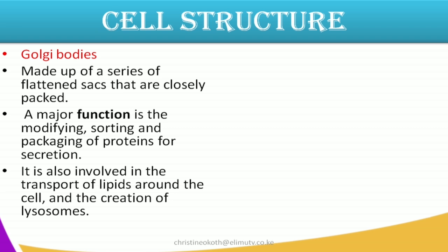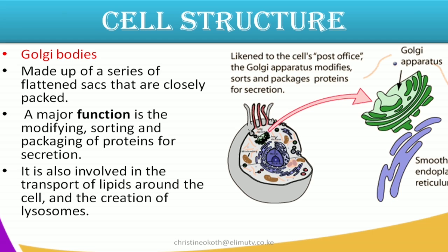Another structure found in the cell is what we call Golgi bodies or the Golgi apparatus. These are made of a series of flattened sacs that are closely packed. The major function is modifying, sorting, and packaging of proteins for secretion. The ribosomes synthesize the protein, and when these proteins are synthesized they need to be packed — the Golgi apparatus are the ones which pack this protein. You can look at the structure of the Golgi apparatus in the figure.